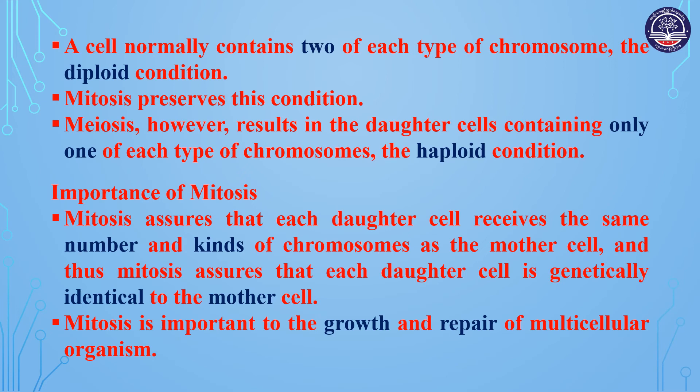Mitosis preserves this diploid condition. Meiosis, however, results in the daughter cells containing only one of each type of chromosome — the haploid condition.